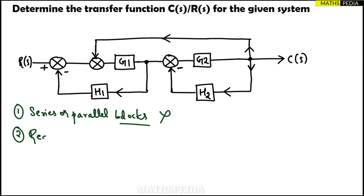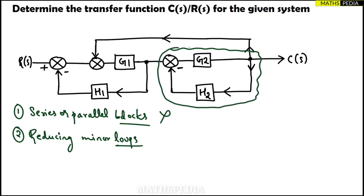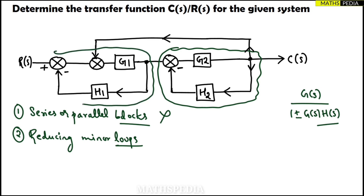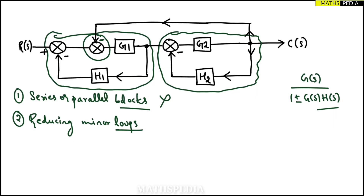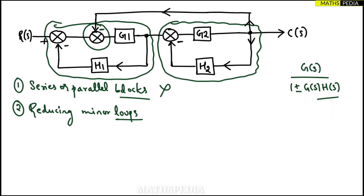Parallel means some gain blocks will be there — one block here, another block below, like G4 — two will be in parallel like that. So you have to be careful. Anyways, since we have no series or parallel blocks, we go for the next step: reducing the minor loops. You can observe these two together form a minor loop. We reduce it using G(s) / (1 ± G(s)·H(s)). However, there is a summing point sitting in between, so we have to remove that first.